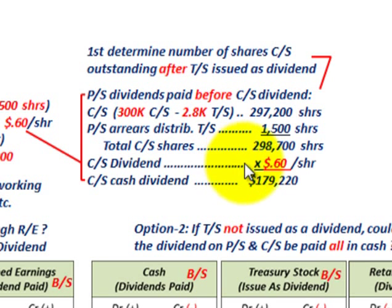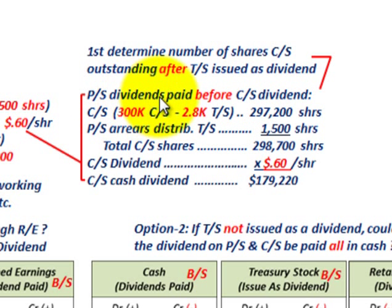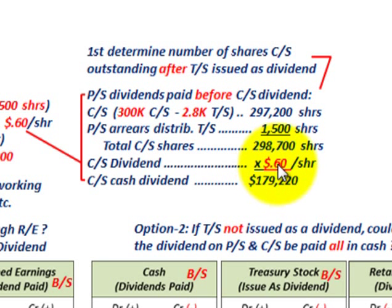The common stock dividend is $0.60 per share. So our total common stock cash dividend is 298,700 shares × $0.60 = $179,220. The key here is that the treasury stock issued as a dividend affects the total number of common shares outstanding, which in turn determines the total common stock cash dividend that has to be paid.